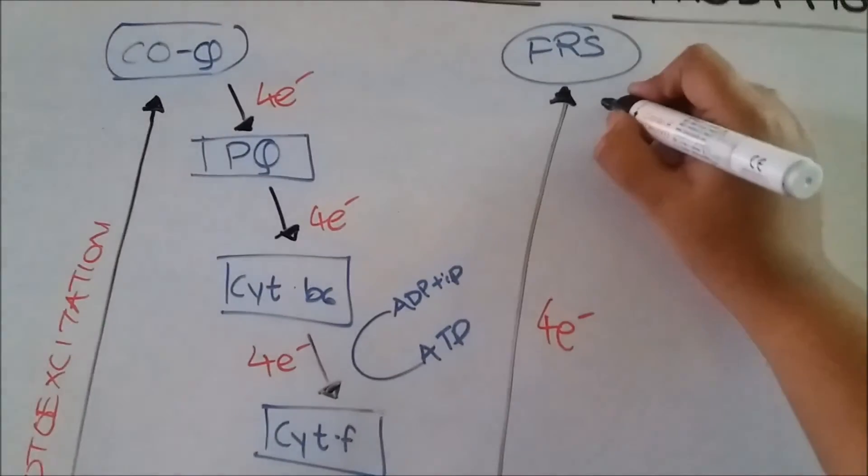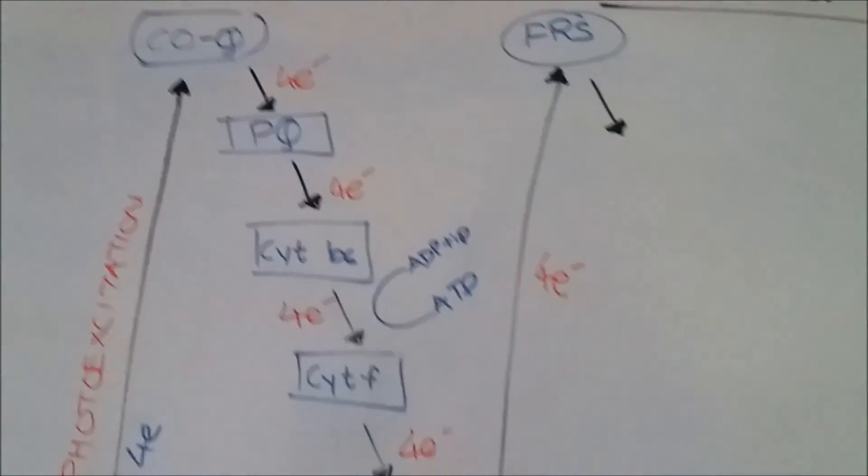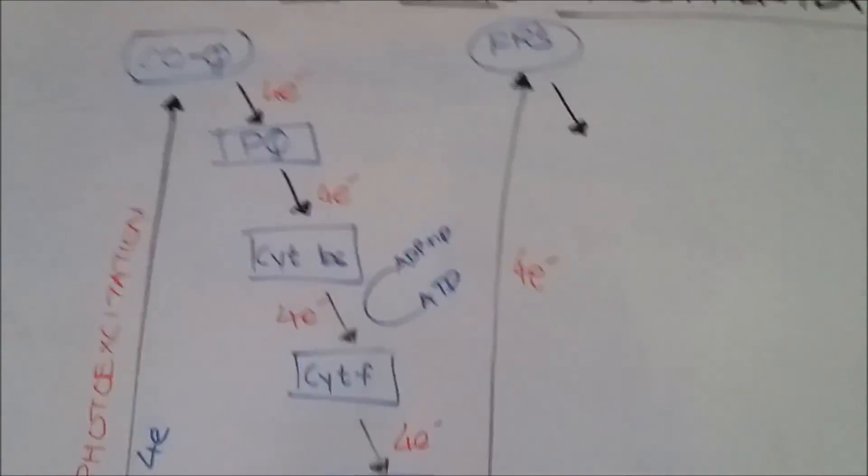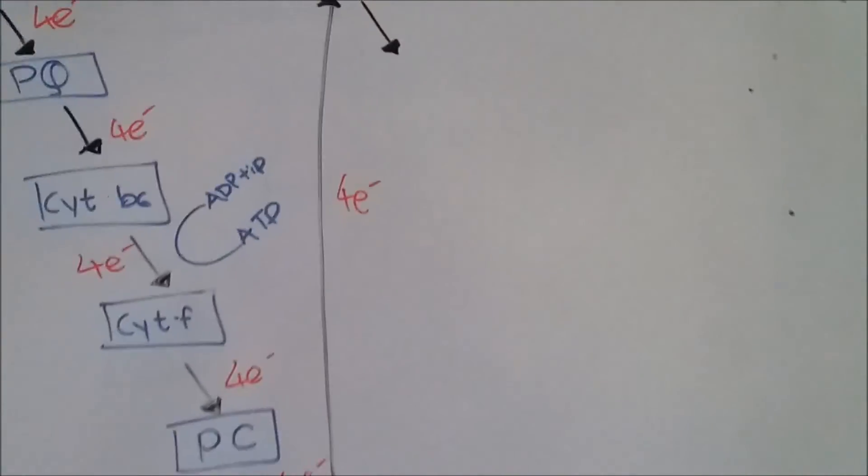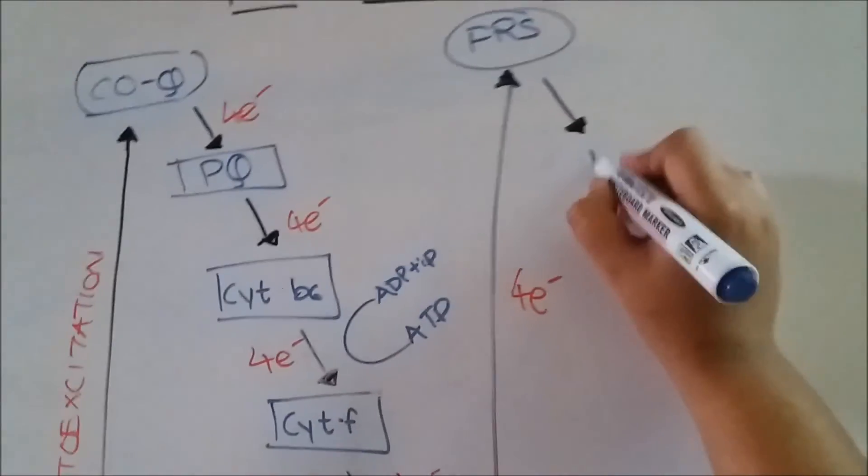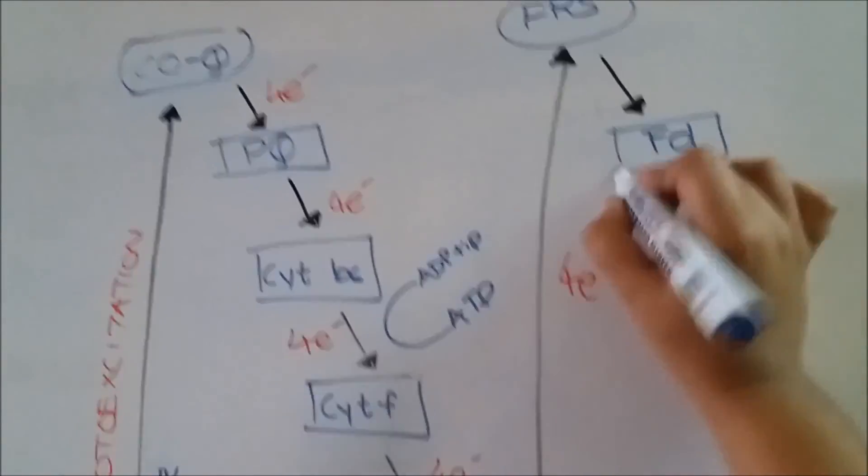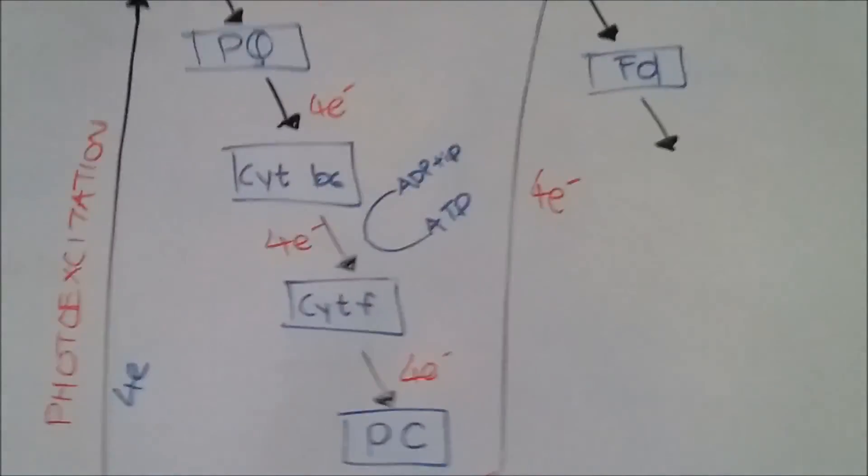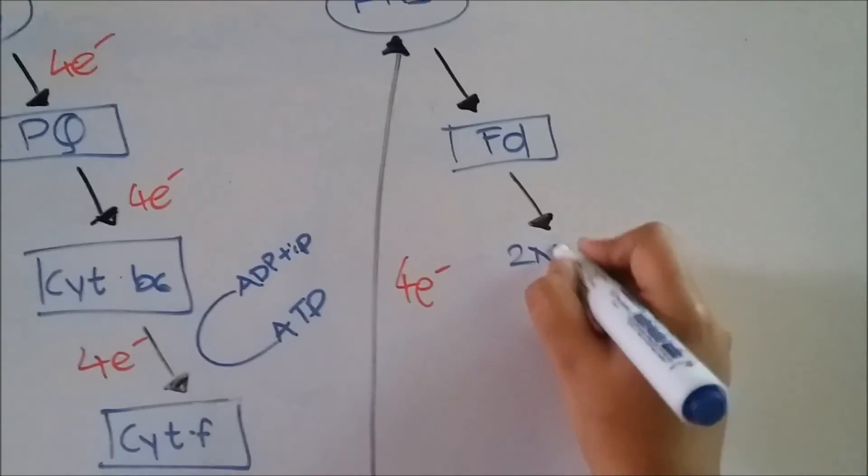This ferredoxin reducing center will pass on electrons, reducing some amount of energy through different electron carriers. So we are directly going to draw our electron carrier and how our energy is produced.